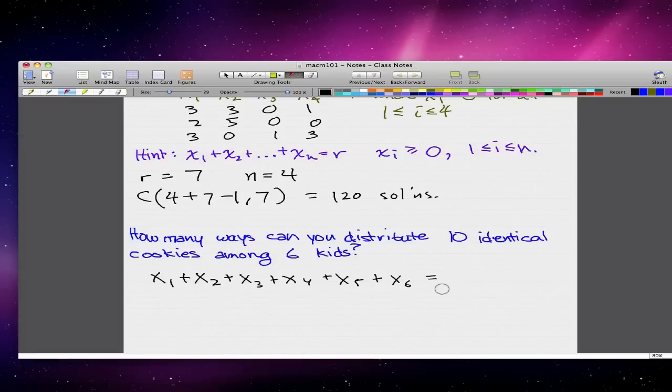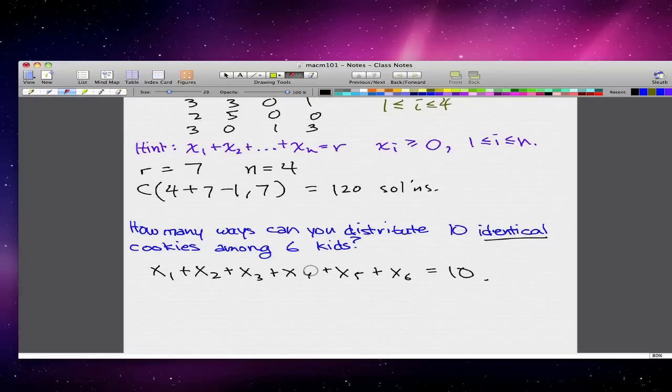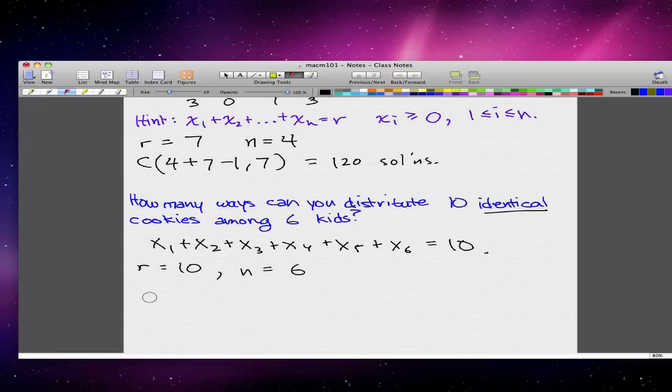Now these cookies are identical because we said it's identical. So x1 plus all the way to x6 is equal to 10. We can already use our formula. Right away, I know you can recognize that r is equal to 10 and n is equal to 6. Using our formula, we get C(6 plus 10 minus 1, choose 10), which equals 3003.